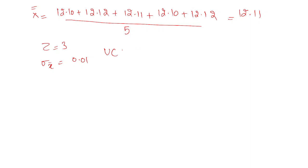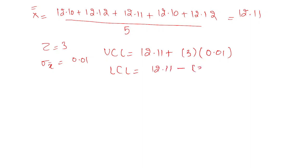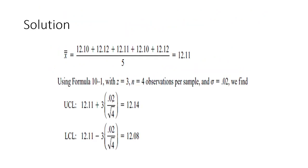Now substitute these values: the upper control limit is 12.11 plus 3 times 0.01, and the lower control limit is 12.11 minus 3 times 0.01. This gives the upper and lower limits for the mean chart. I hope that is clear to all of you.